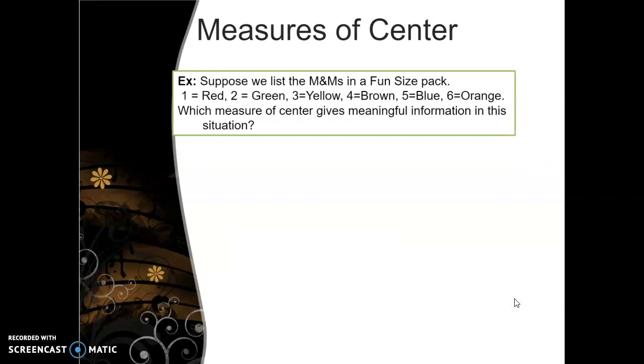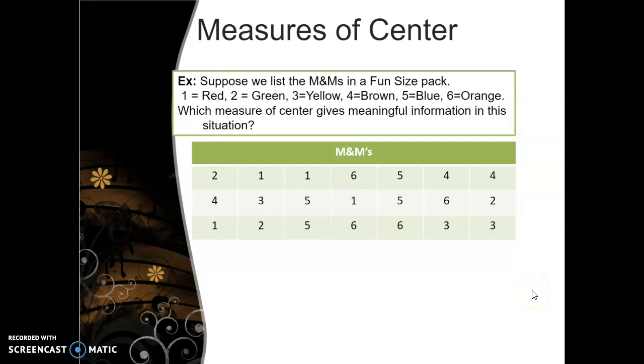So for an example, let's suppose that we list M&Ms in a fun-sized pack. We say 1 is equal to red, 2 is green, 3 is yellow, 4 is brown, 5 is blue, 6 is orange. Which measure of center gives meaningful information in this situation? So here's the list of all the different colors of M&Ms. And we're just going to assign numbers to the colors.